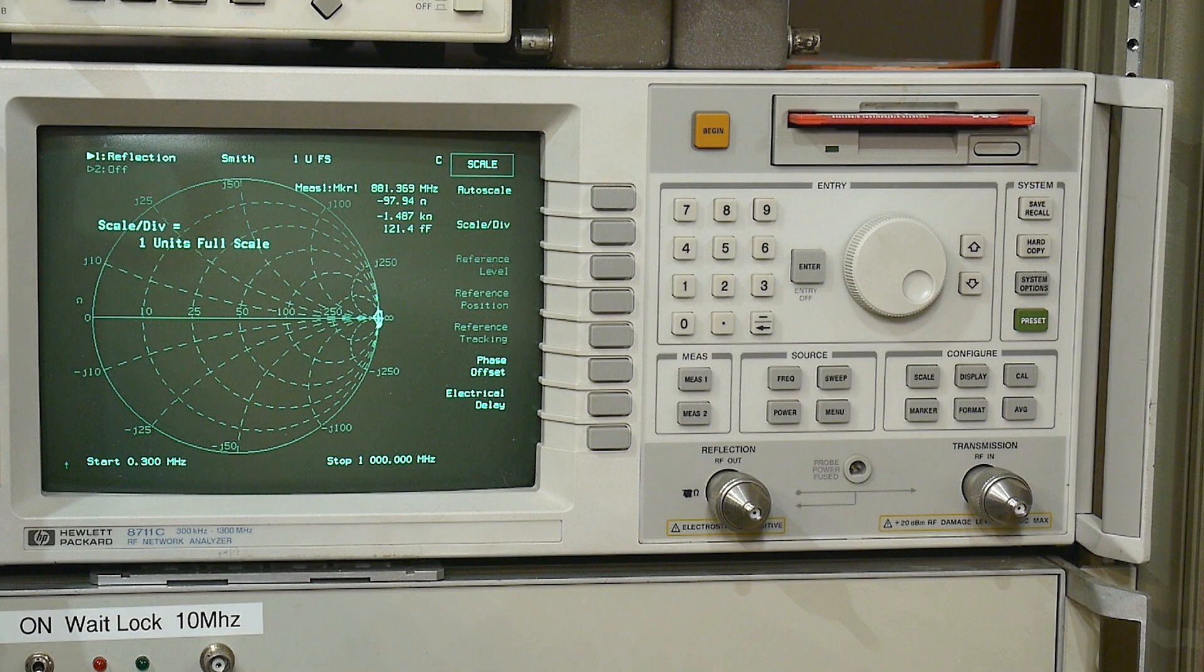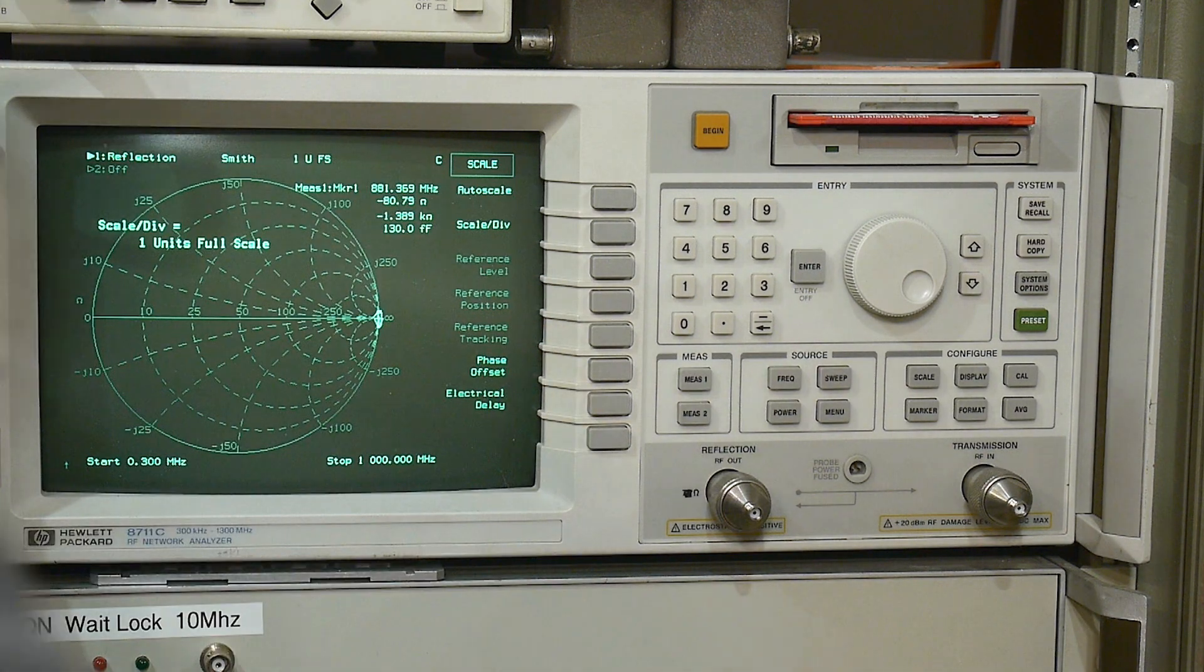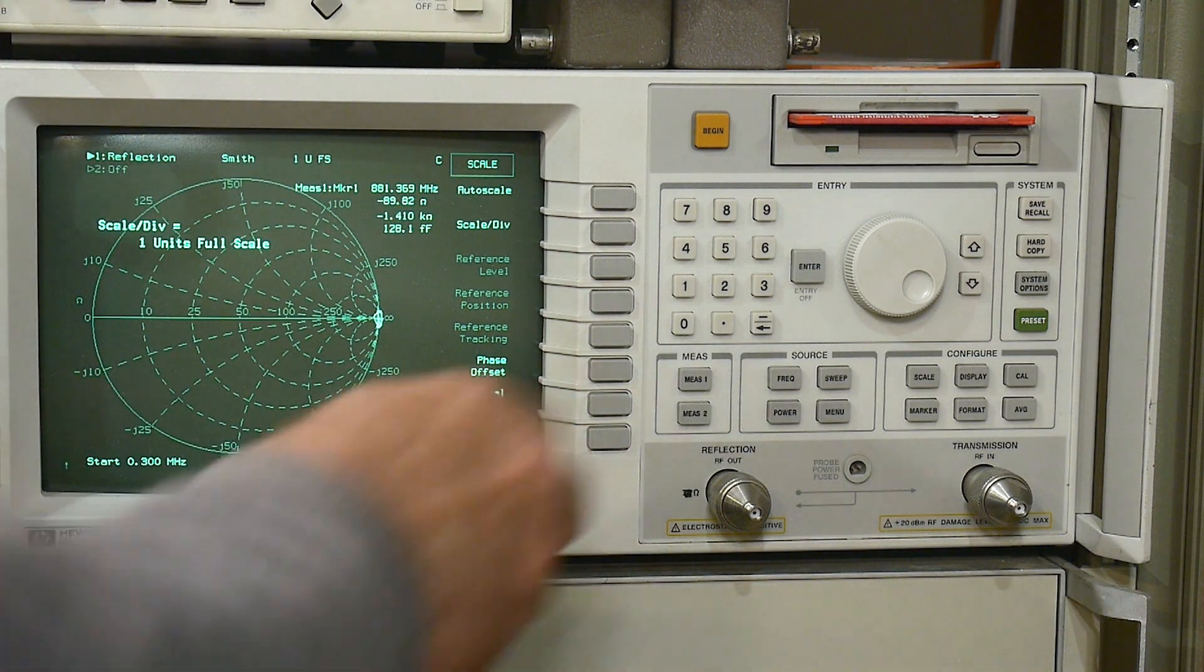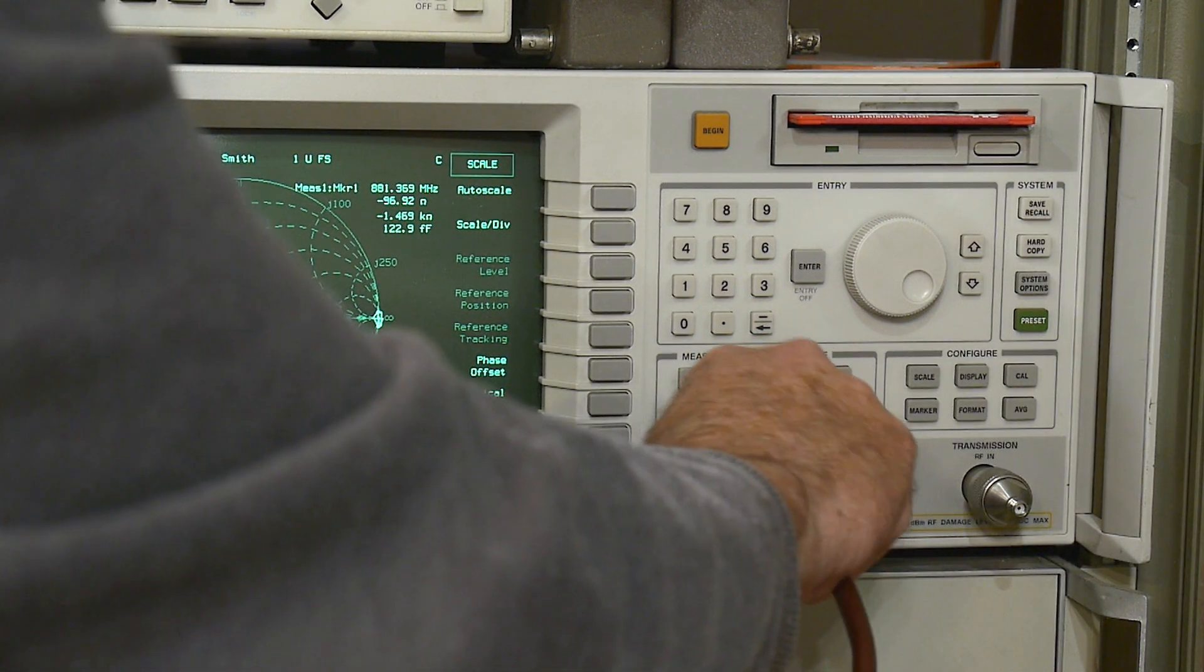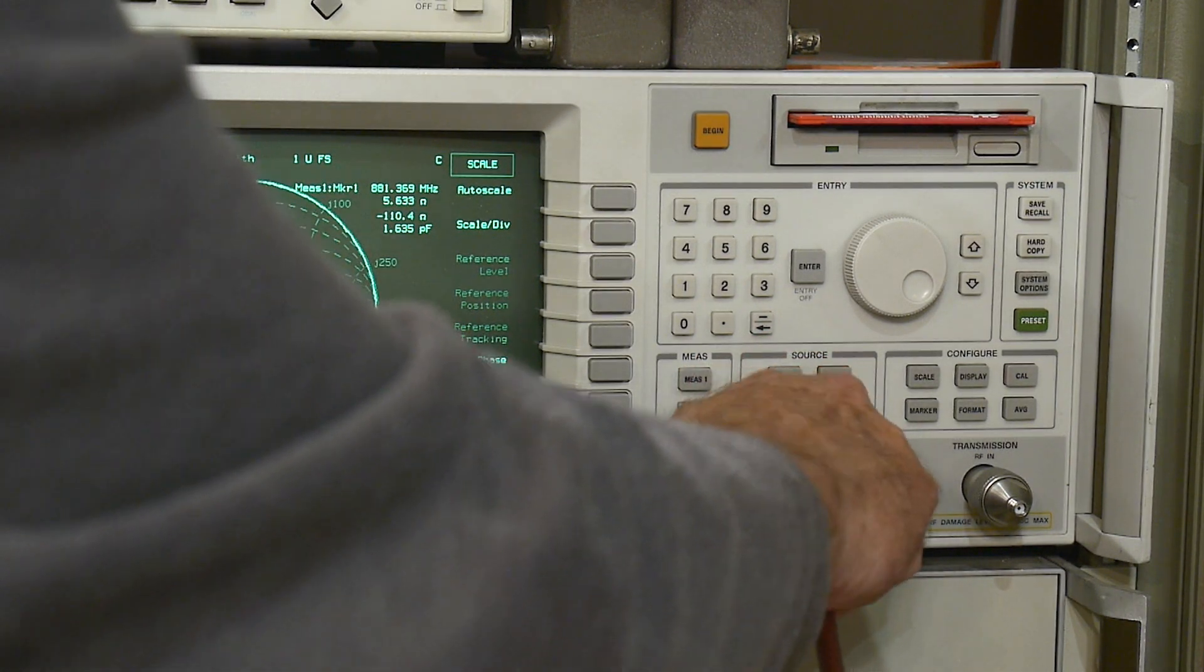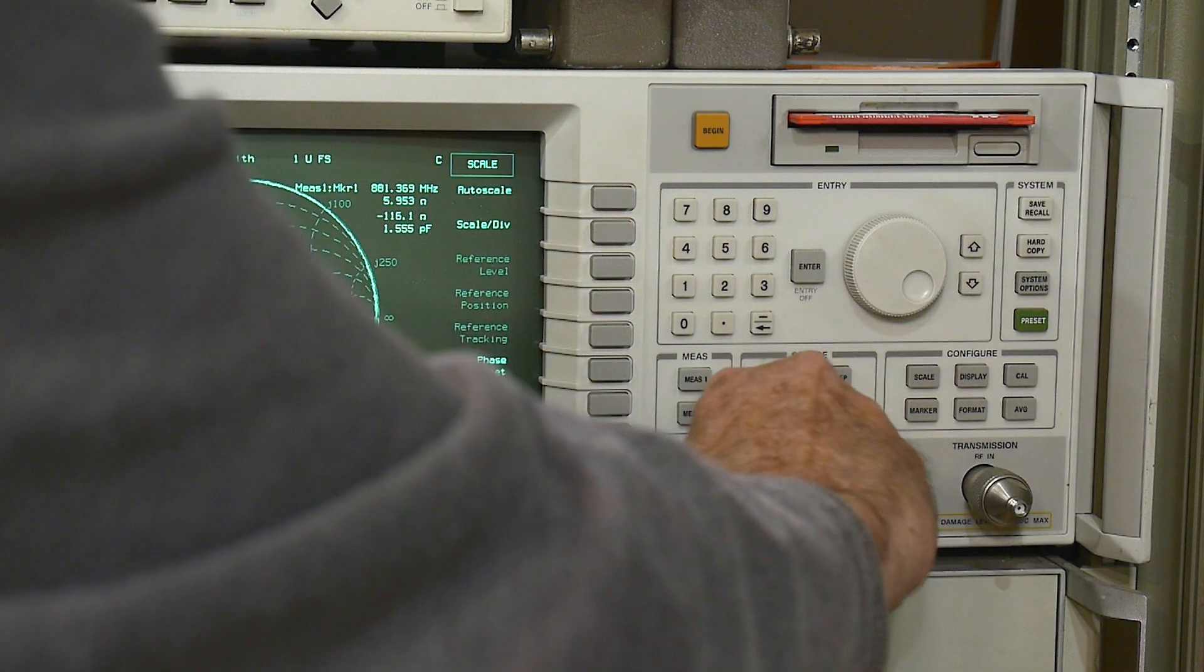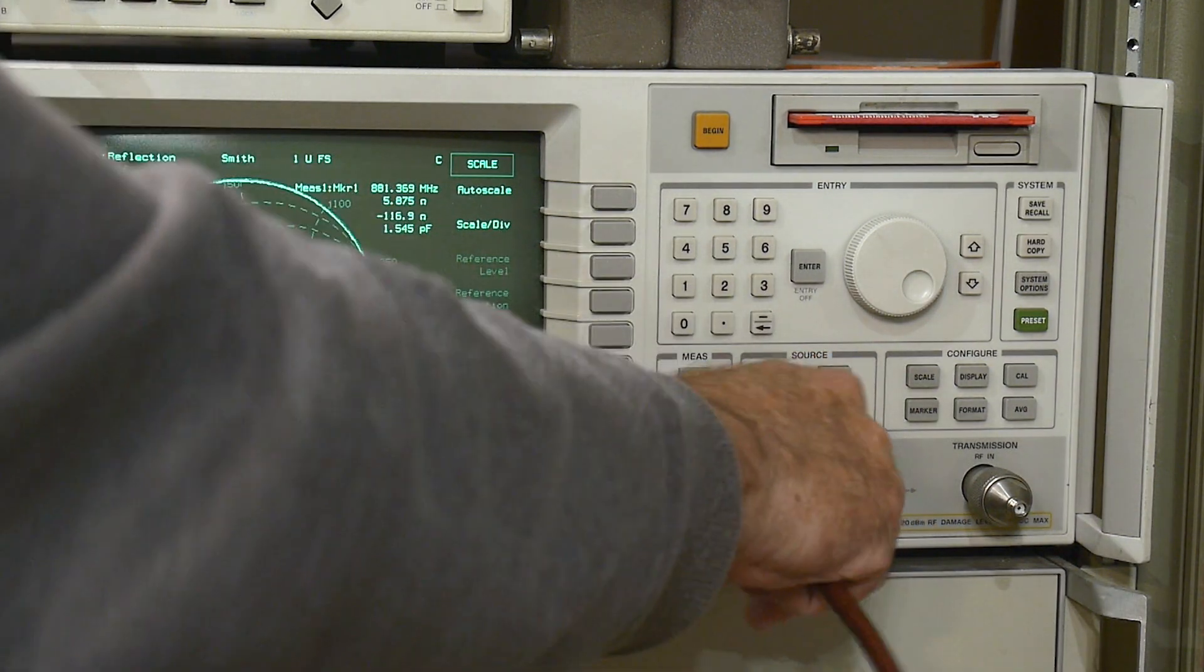I did a video before about a quick way to see if you have lossy cables. A good cable goes all the way around the outside. Let me demonstrate that. This is a good cable - screw it on and it goes all the way around the outside. If you have a lossy cable, it goes towards the middle. This is a good cable, and it goes all the way around the outside.